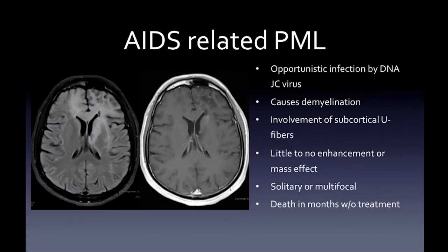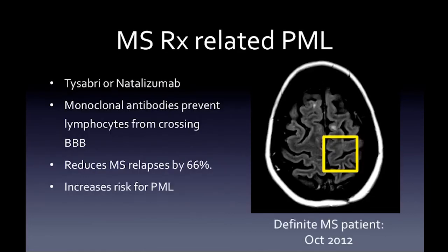PML — progressive multifocal leukoencephalopathy. The AIDS-related type is an opportunistic infection by the DNA JC virus causing demyelination, usually involving subcortical U-fibers with little to no enhancement or mass effect relative to lesion size. You can actually see volume loss, as in the left frontal lobe of this case. Lesions can be solitary or multifocal, and without treatment the patient will die within months.